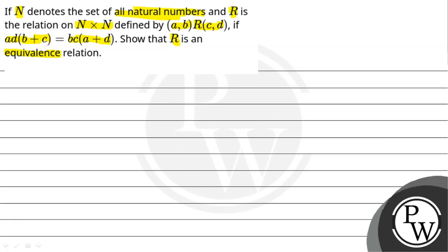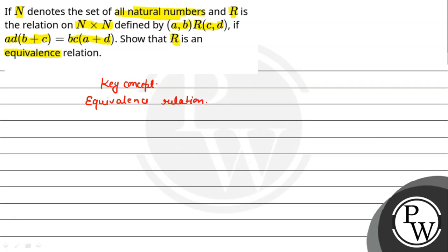So this is the key concept — what is the key concept? The key concept is that we have to prove the relation is an equivalence relation. Our relation is an equivalence relation when it is reflexive, symmetric, and transitive.